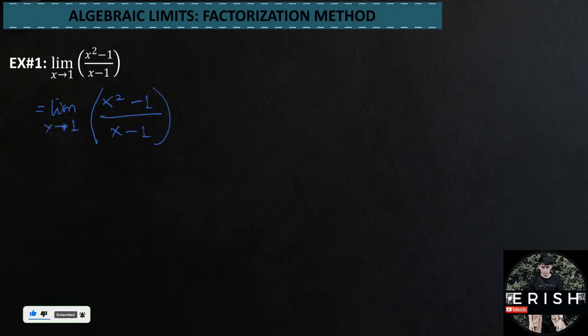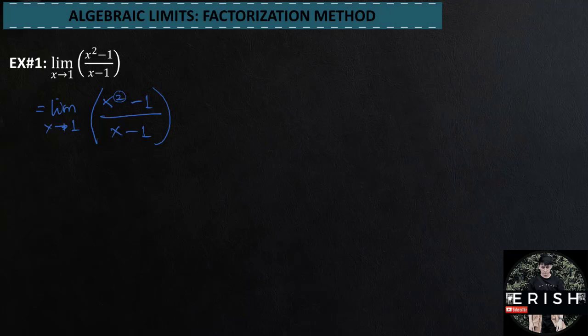One purpose of why we use the factorization method is so that we can cancel terms. So what should be factorized? In this situation, what we need to factorize is the numerator. So let's continue.